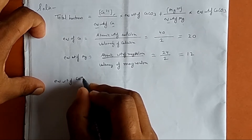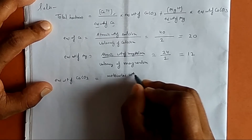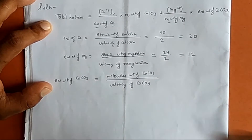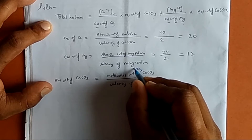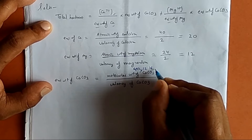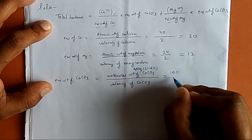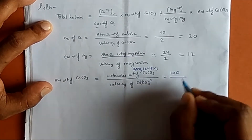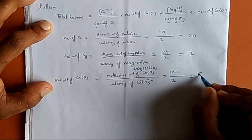The equivalent weight of calcium carbonate equals the molecular weight of calcium carbonate divided by its valency. The molecular weight is calculated as: calcium = 40, carbon = 12, and oxygen = 16 × 3 = 48, summing to 100. The valency of calcium carbonate is 2 (calcium is +2, carbonate is -2), giving an equivalent weight of calcium carbonate as 50.